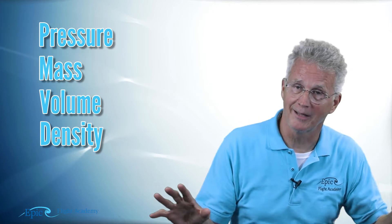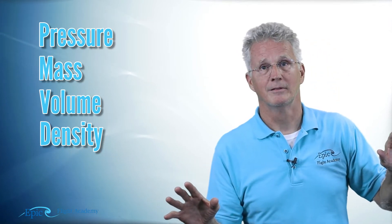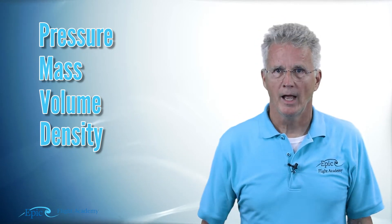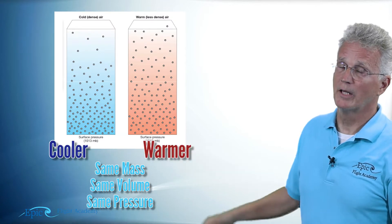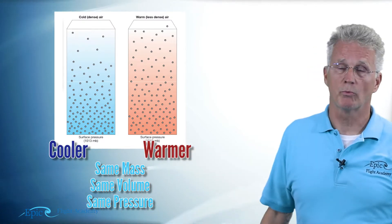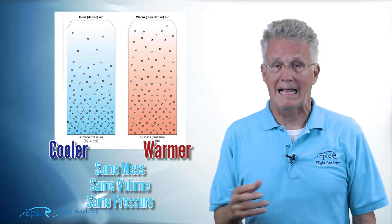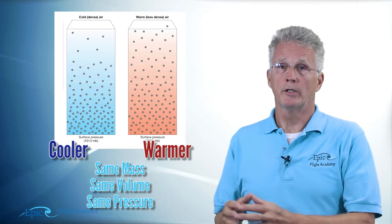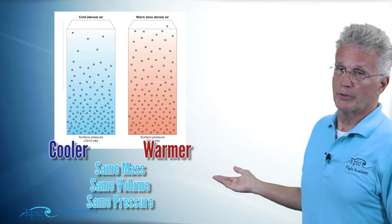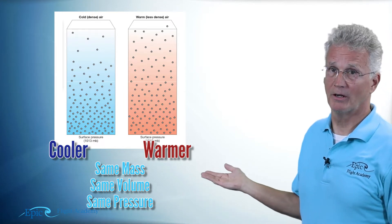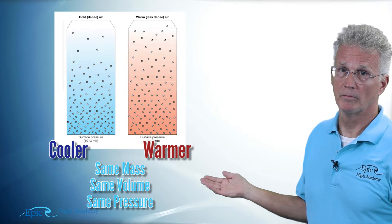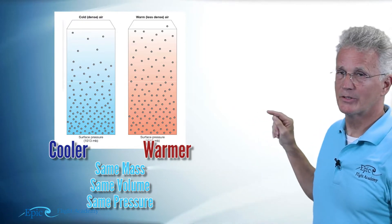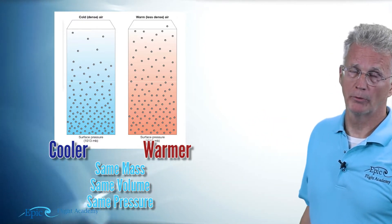Now don't be scared and run away, it's not that complicated. We're going to take two imaginary columns of air, and you can see those here. On your left is the blue column of air and on your right is the red column of air. As you might have guessed, the blue one is cooler and the red one is warmer. But I want you to notice it's the same mass of air in both columns, the same volume in both columns, and the same pressure in both columns.